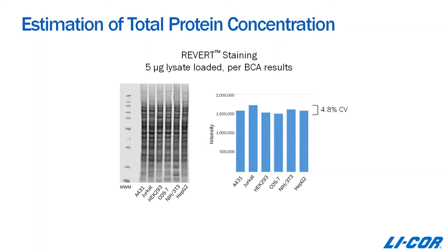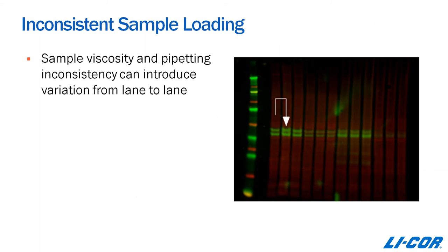Another issue that occurs, and I'm sure this is something everybody can relate to, is when loading a gel you sometimes get sample that spills over from one well to the next. This can be due to an air bubble or differences in sample viscosity that might push sample into an adjacent lane — which is exactly what you're looking at here. This isn't possible to eliminate entirely, but you can identify this variation by running replicates and use normalization to reduce the effects of this type of variation.